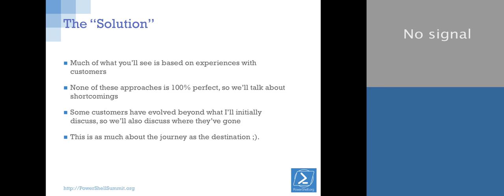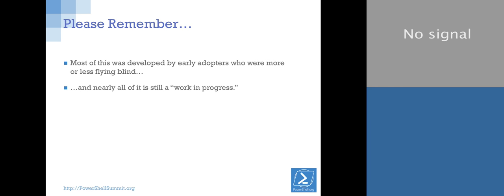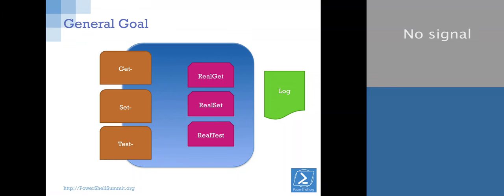Here's where they decided to go. The general goal: you've got your get, set, and test on the left. In version 4, those are functions. In version 5, they become methods of a class. Their goal was to put as little code as possible into those three functions. You can have lots of private functions floating around inside. They want the majority of code to live in three or more internal functions that can't be seen elsewhere. And there's also a log, important for debugging.